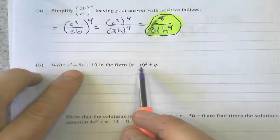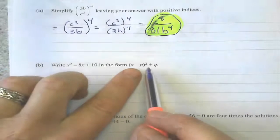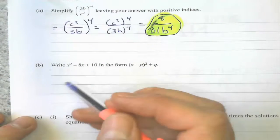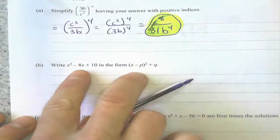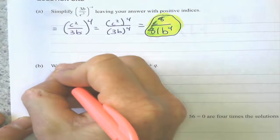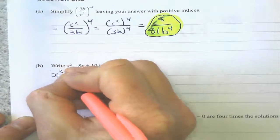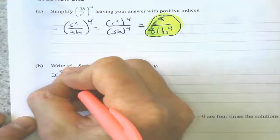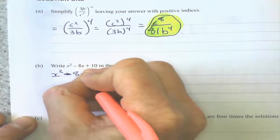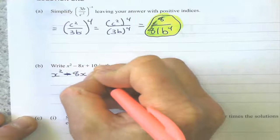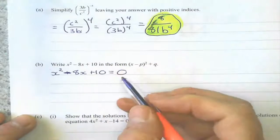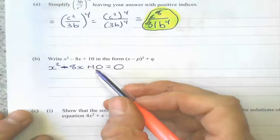The first thing I did: change this quadratic into the form of x minus p squared plus q. Most people go, what the heck is going on here? So what I looked at is minus 8x plus 10 — I looked at it as a completing the square problem.